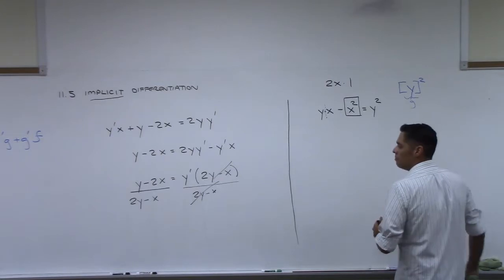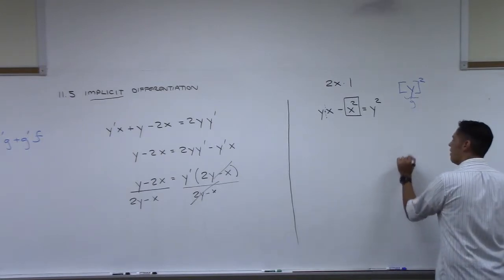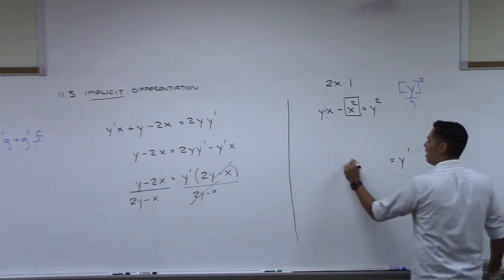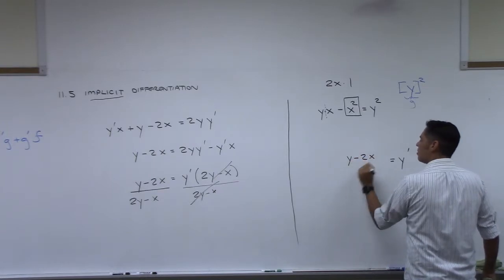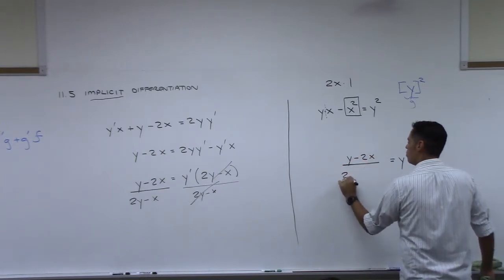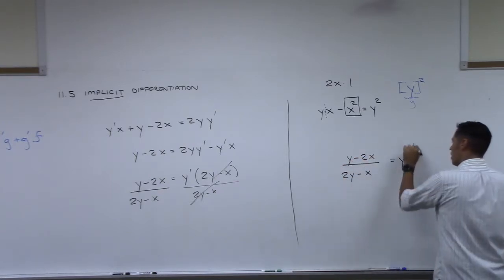What's on the right hand side? Y prime, which is what we're trying to find. And on the left hand side, y minus 2x over 2y minus x. There's your answer.